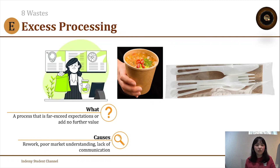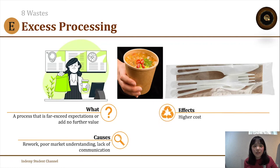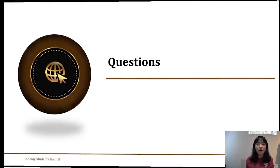Excess processing can be caused by poor market understanding or lack of communication between departments — for example, the sales team not communicating the actual quality requirements to production, leading production to apply unnecessarily high standards. The effect is higher cost. The solution is conducting good Customer Relationship Management, or CRM, which will be covered in another video.